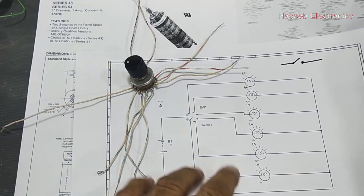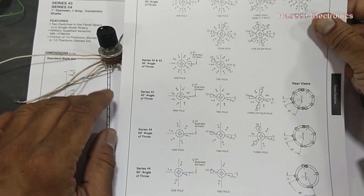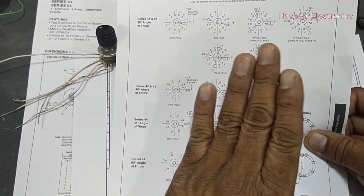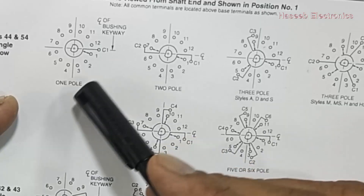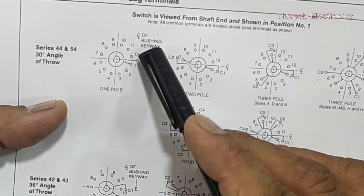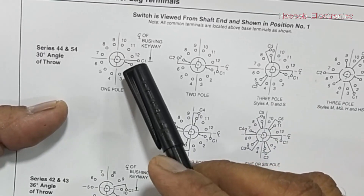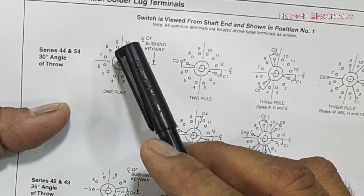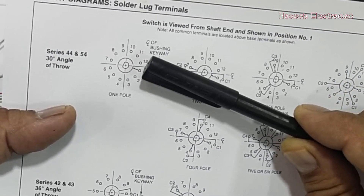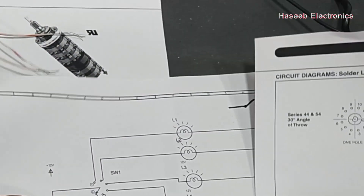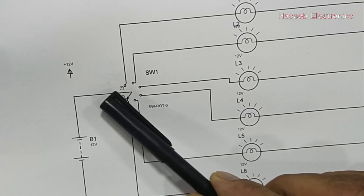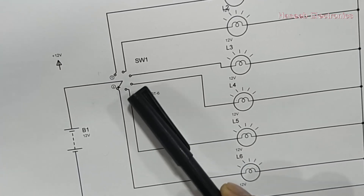Looking at its internal structure, there are different configurations: single stage single deck, double deck, multiple decks. This one is single pole — one common pin — and it has one through twelve pins, so twelve contact pins with just one common pin. The common pin will make connection with whichever pin is required.